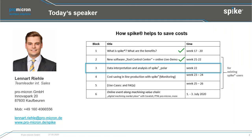As you may have seen and understood by now, this webinar session is to show you and explain the benefits you can get by using Spike, and the key benefit is cost-saving. In the first webinar, we showed you what Spike is and its benefits. Then we introduced the new Tool Control Center software. Today, we want to show you how to read the data correctly.